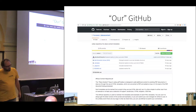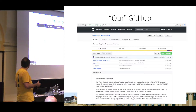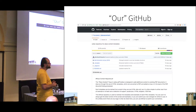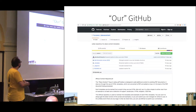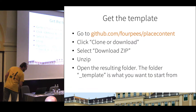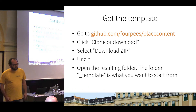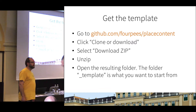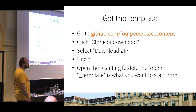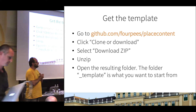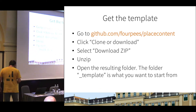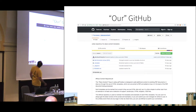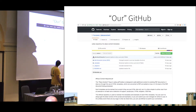GitHub ends up looking like this. You can create repositories where you check in a bunch of stuff. You can make repositories that are private so only you can see them, or public so they can be shared with the whole world. There is a repository at github.com/fourpees/placecontent that has some private content you won't see and some public content you will see. If you go there and have your computer open, you get to see more or less this.